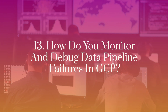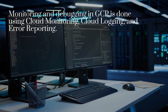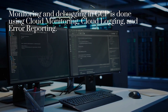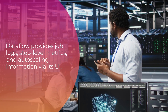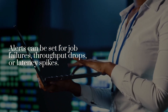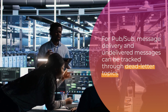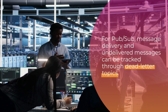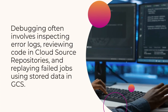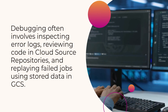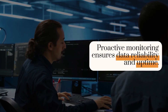Thirteen: How do you monitor and debug data pipeline failures in GCP? Monitoring and debugging in GCP is done using Cloud Monitoring, Cloud Logging, and Error Reporting. Dataflow provides job logs, step-level metrics, and auto-scaling information via its UI. Alerts can be set for job failures, throughput drops, or latency spikes. For Pub/Sub, message delivery and undelivered messages can be tracked through dead-letter topics. Composer logs are available in Stackdriver. Debugging often involves inspecting error logs, reviewing code in Cloud Source Repositories, and replaying failed jobs using stored data in GCS. Proactive monitoring ensures data reliability and uptime.